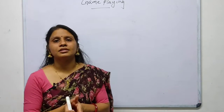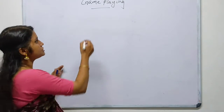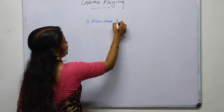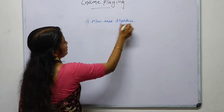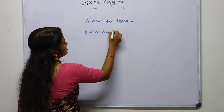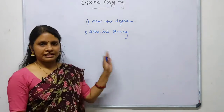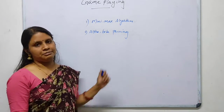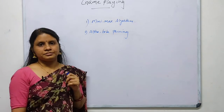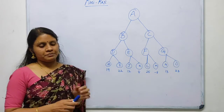The two important searching techniques used in game playing are the minimax algorithm and alpha-beta pruning. These two search techniques are what you have to study in game playing. First, we will discuss the minimax algorithm used in gameplay.